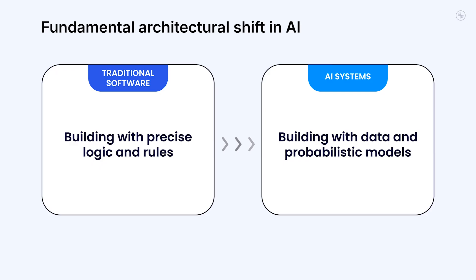That's a major shift for the software development lifecycle. Instead of static rules, AI systems are continuously learning and adapting from data. And yet, most architectures aren't designed for this. They still treat AI and data as separate worlds or operate in fragments.